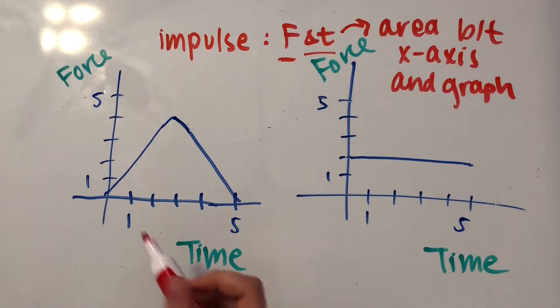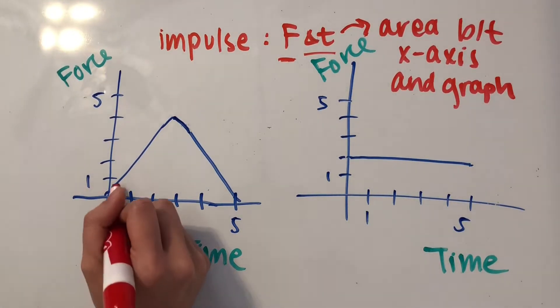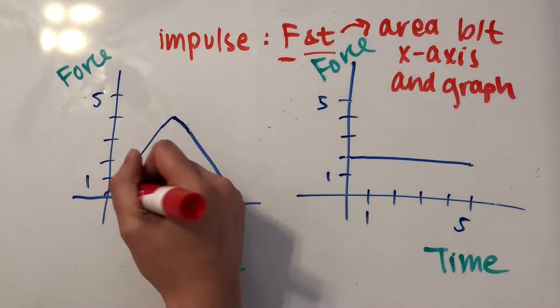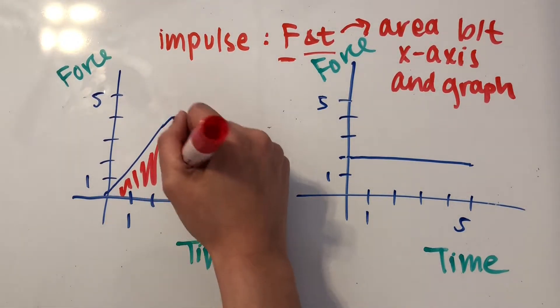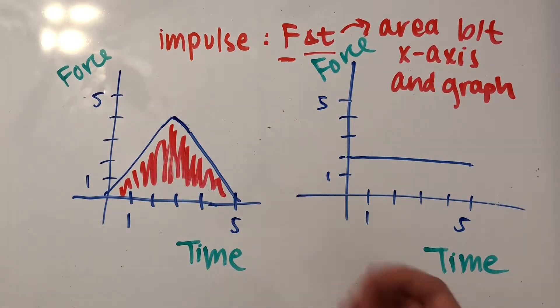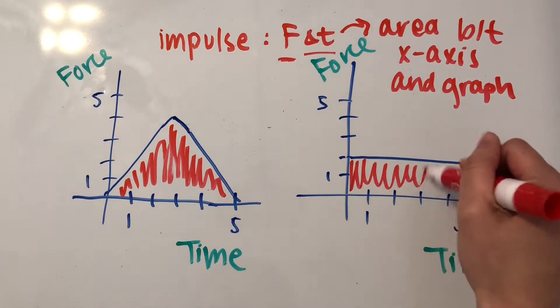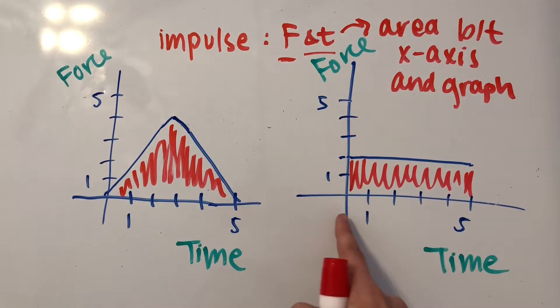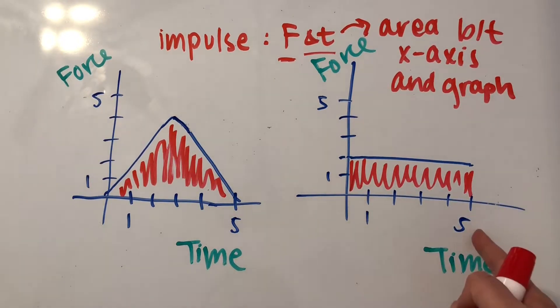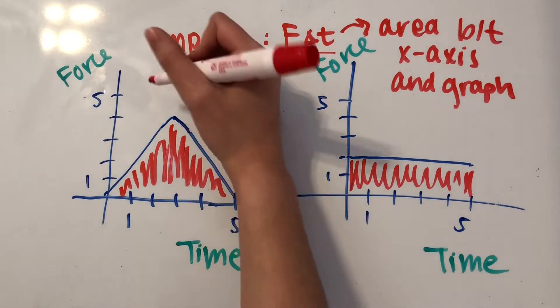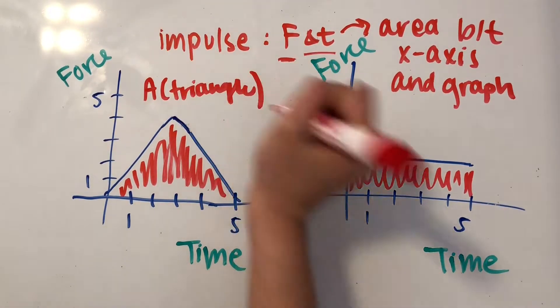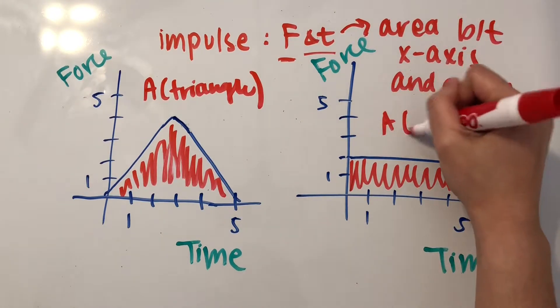Well, for this first graph, we'd see that the area between the x-axis and the actual function would be this triangular area here that I'm shading right now. And over here for the second force versus time graph, we have this rectangular area, which extends from time equals zero to time equals five. And the main difference between these two is that here you're taking the area of a triangle, and in this one you're just taking the area of a rectangle.